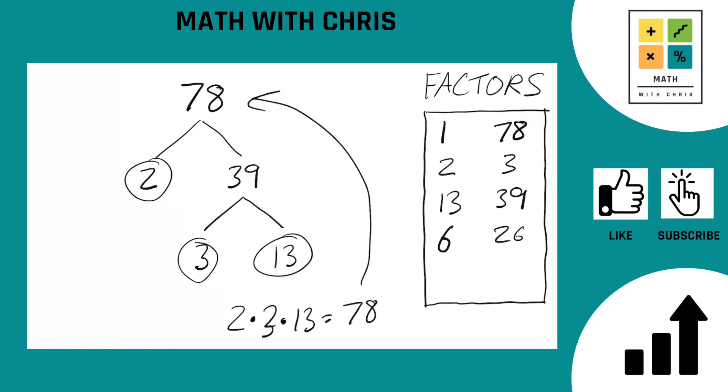We got 8 factors here. They include 1, 2, 3, 6, 13, 26, 39, and 78 itself. That's a wrap on the factors of 78.